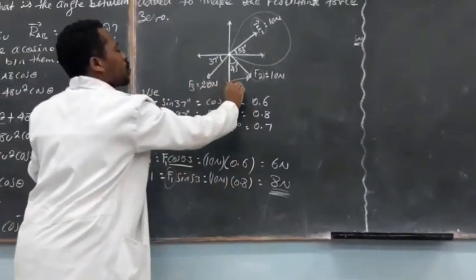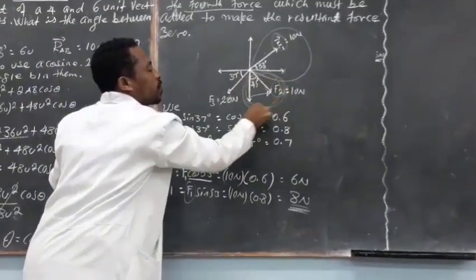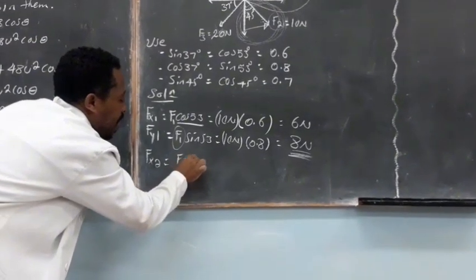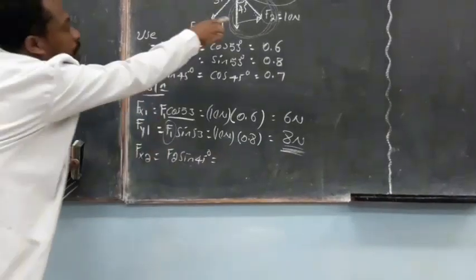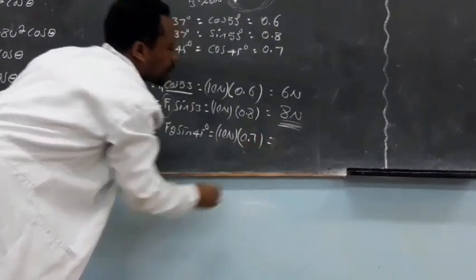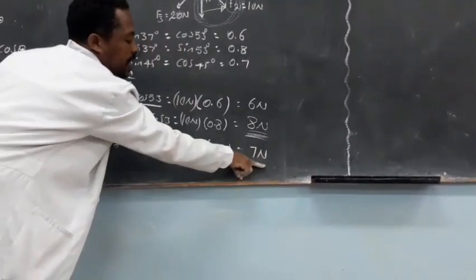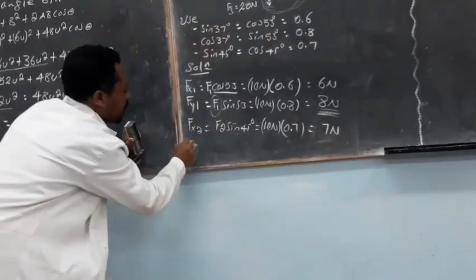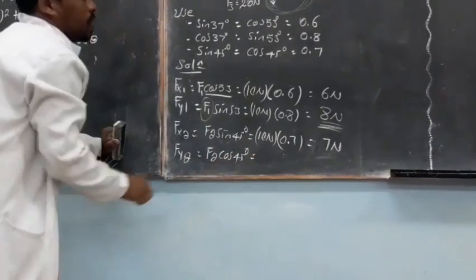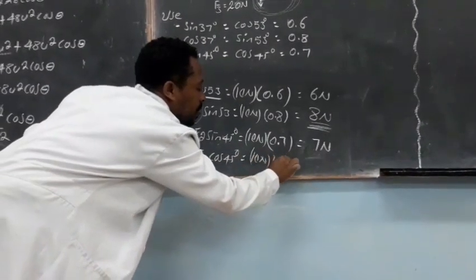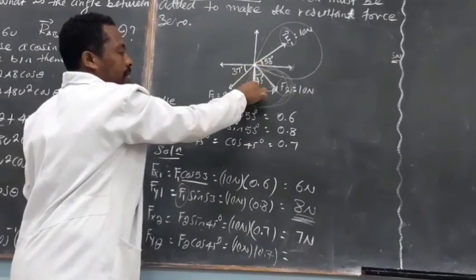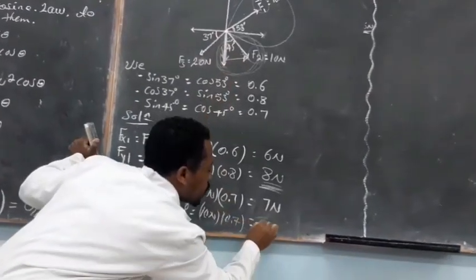In the same manner, we have to find the components of the second force vector. F2x equals F2 times cosine 45 degrees. F2 is 10 newtons, and cosine 45 is 0.7, so it should be positive 7 newtons along the positive x-axis. F2y equals F2 times cosine 45 degrees, which is 10 newtons times 0.7, and since its y-component lies along the negative y-axis, it should be negative 7 newtons.